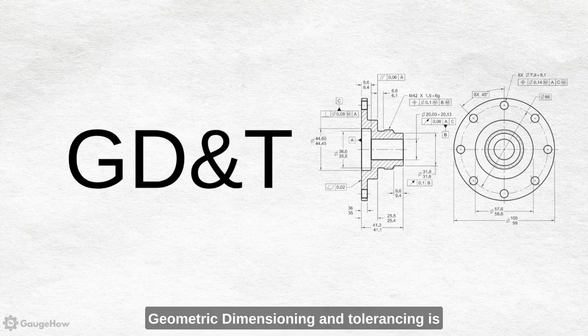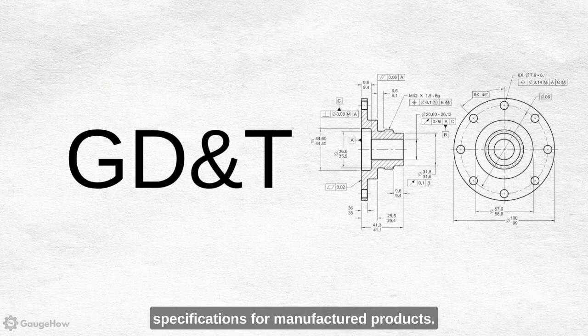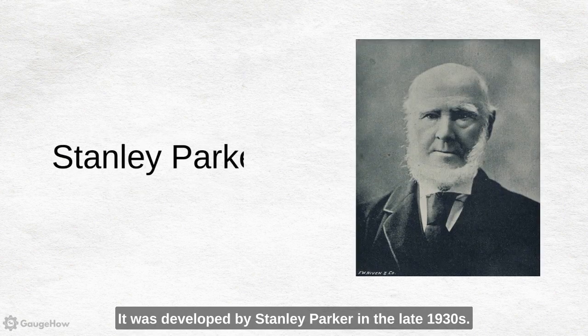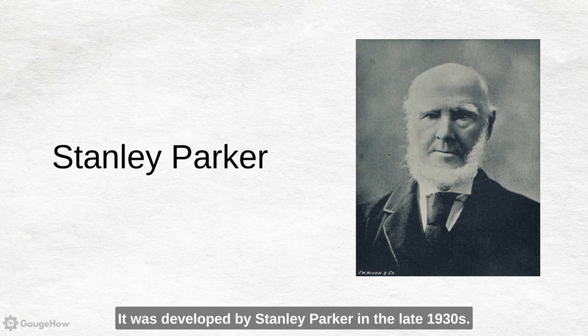Geometric dimensioning and tolerancing is a way to communicate design specifications for manufactured products. It was developed by Stanley Parker in the late 1930s.